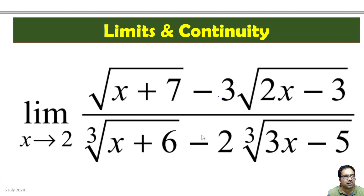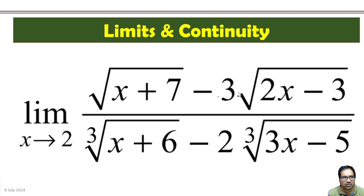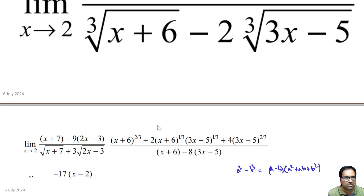Let us do some basic algebraic manipulation and rationalize both of these. The numerator is in the form of a minus b, so we multiply with the conjugate a plus b over a plus b. Similarly, the cube root expression will be multiplied with its conjugate.